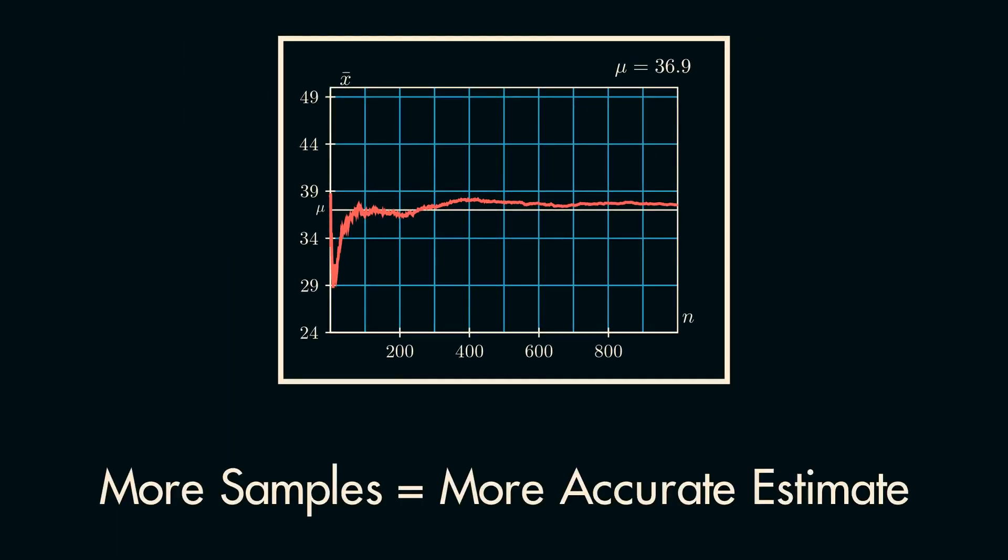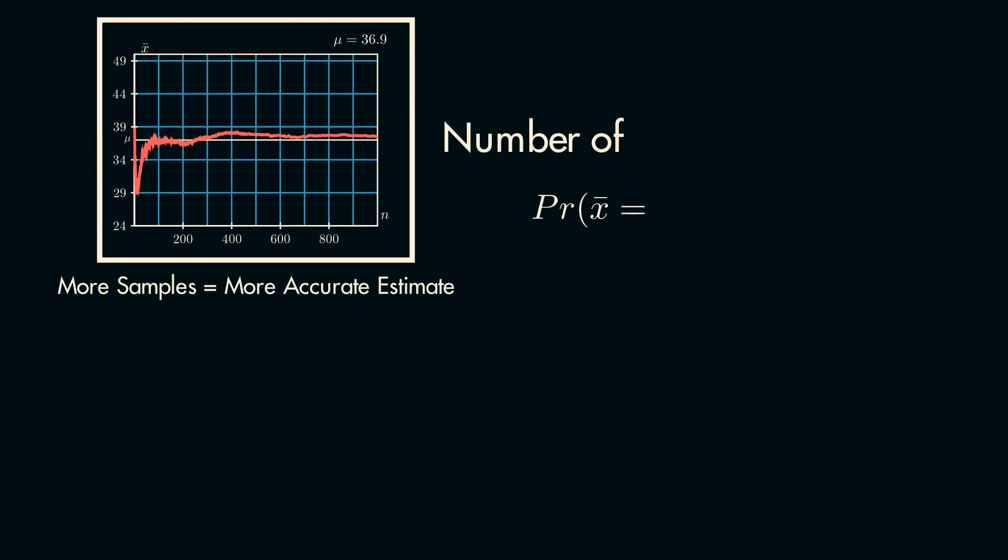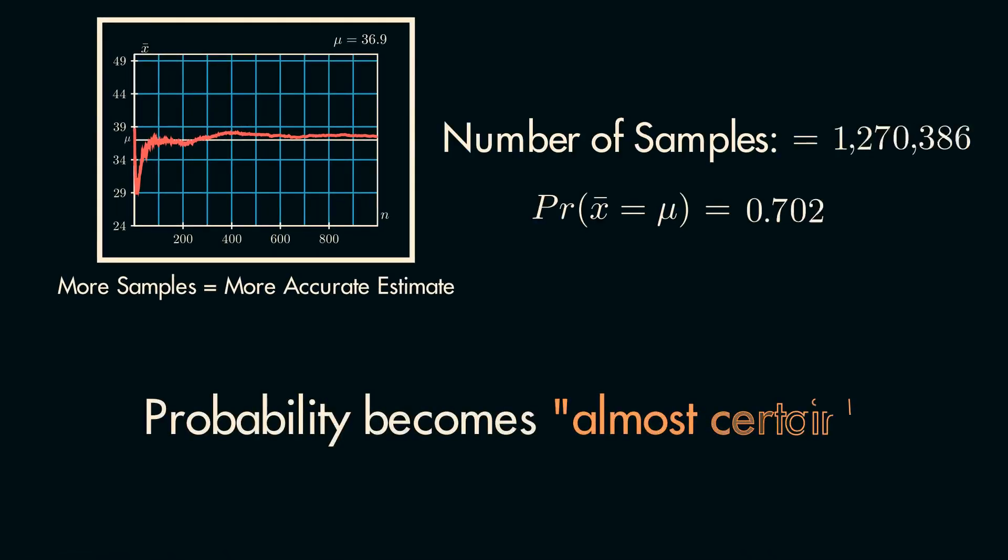Essentially we are saying that as we continue to take a very large number of samples, the probability that the average of these samples and the true mean of the entire population are equal to each other becomes almost certain.